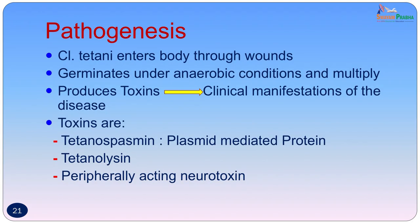How does the disease actually occur? Clostridium tetani, once entered through the wound, germinates under anaerobic conditions and multiplies. When they multiply they produce a toxin, and the clinical manifestations are because of the toxin. The bacteria are restricted to the site of entry, but the toxin travels and the initial bacteria may also die; the toxin performs the functions causing clinical disease. The toxin consists of three components: tetanospasmin, tetanolysin, and a peripherally acting neurotoxin. Tetanospasmin is plasmid-mediated and is the main toxin responsible for the signs and symptoms of tetanus.